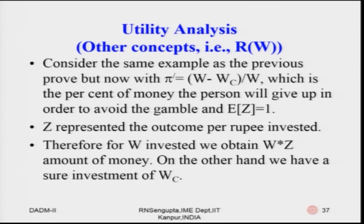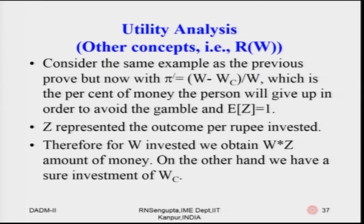Consider the same example as for the absolute risk aversion property, but now in the relative sense rather than the absolute sense. The absolute ratio is given as (W minus W_C) divided by W. Case one is on the left-hand side with W plus a fair gamble where E(Z) equals zero and variance sigma squared Z. On the right-hand side, case two, we have a total investment of W_C.